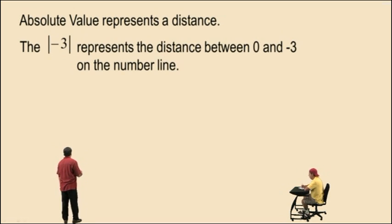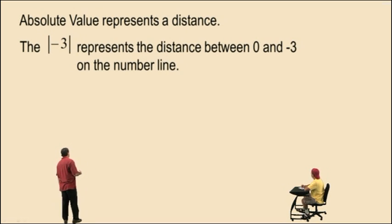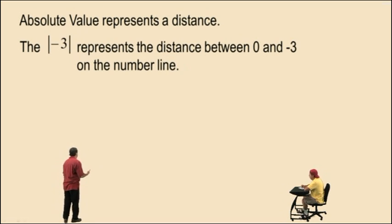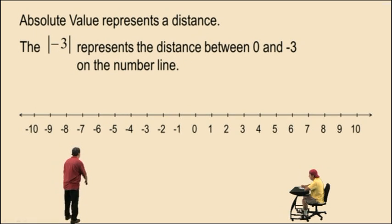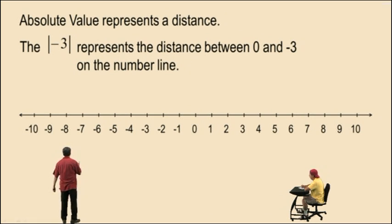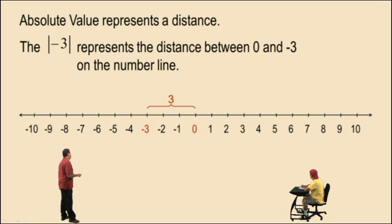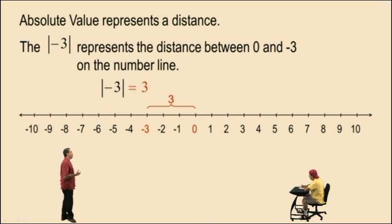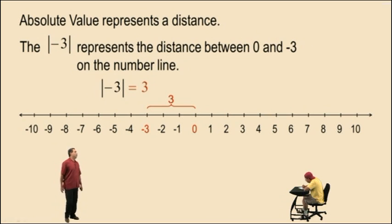So the absolute value of negative 3 represents the distance between 0 and negative 3 on the number line. Here's negative 3, and notice negative 3 is 3 units from 0 on the number line. Therefore, the absolute value of negative 3 is positive 3.